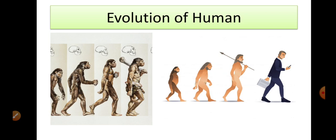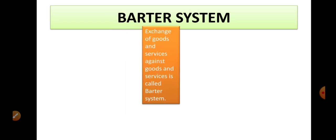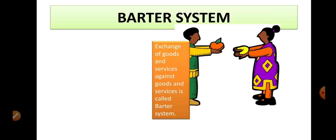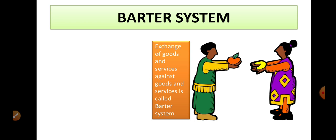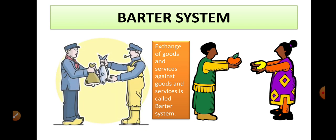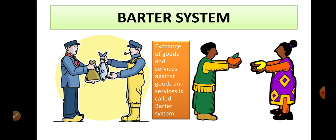This conversion started with the barter system. We have seen money. Let's see what is the barter system. The barter system is the exchange of goods and services against goods and services. This is called barter system. If you have any product that you need, you have to exchange it with other people who have other products.